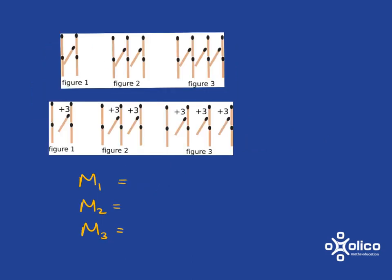Try this quickly for yourself. Write down what M1, M2 and M3 is. Okay, M1, number of matchsticks in figure 1, so that is 5. M2, number of matchsticks in figure 2, that's 8. Number of matchsticks in figure 3 is 11.